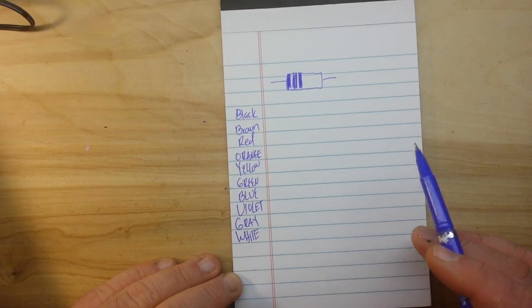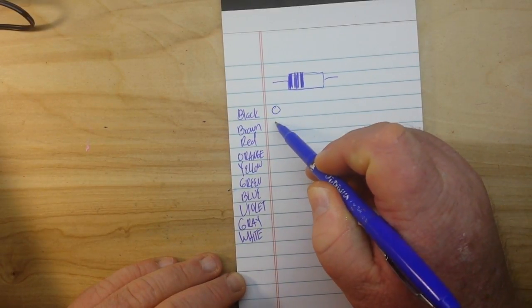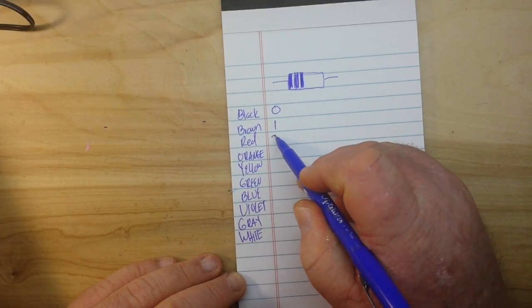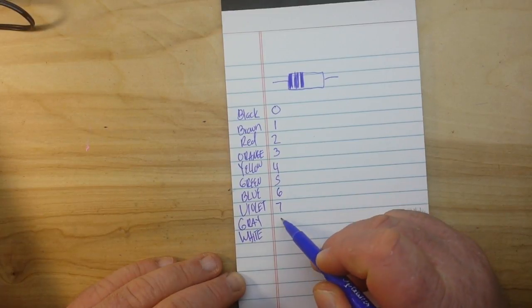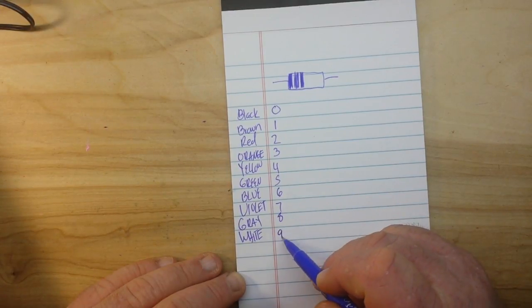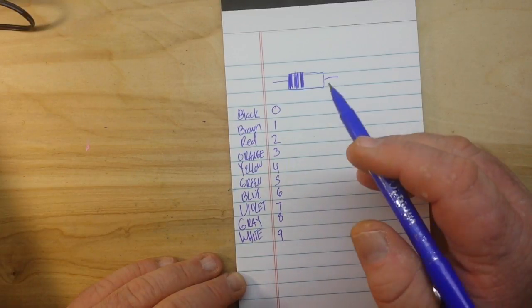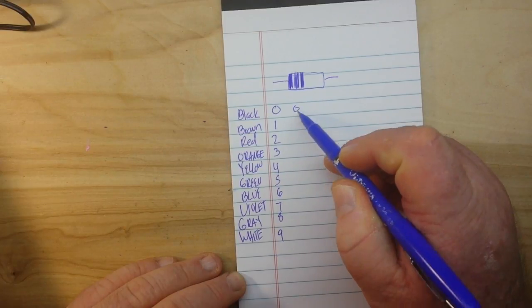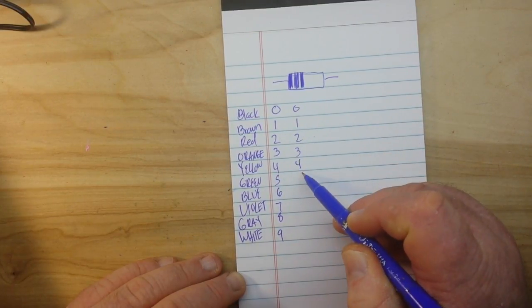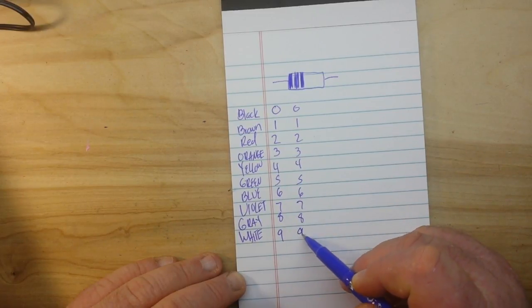So anyway, black is zero, brown is one, two, three, four, five, six, seven, eight, and nine. And it goes the same for the second band. Zero, one, two, three, four, five, six, seven, eight, and nine.